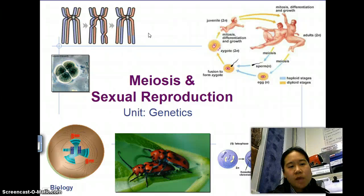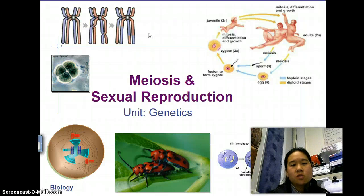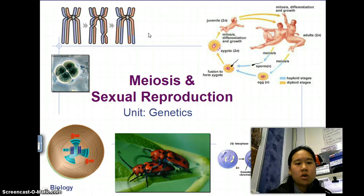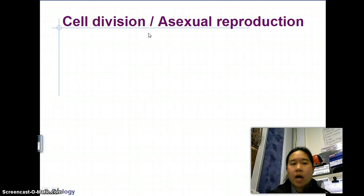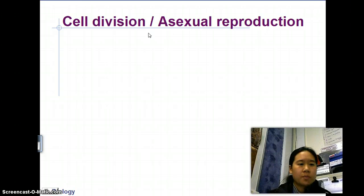We're going to be talking about meiosis. Meiosis is the opposite of mitosis in that mitosis maintains your cellular genetic material, while meiosis makes new copies — or actually not necessarily new copies, but new types of cells that are different.